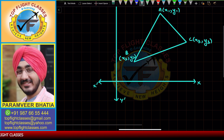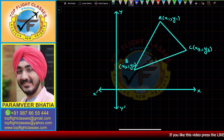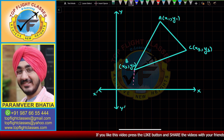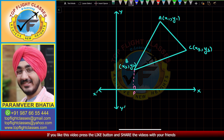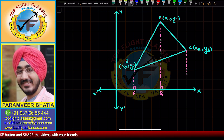We will do a construction like we have done in the distance and section formula. That is, I will construct perpendiculars from all three points to the x-axis. We will draw a perpendicular — let us say this is P, then another — let us say this is AQ, and another — let us say this is CR.